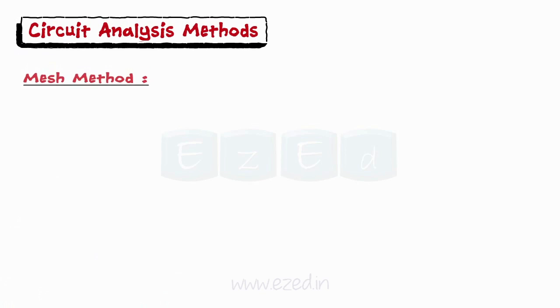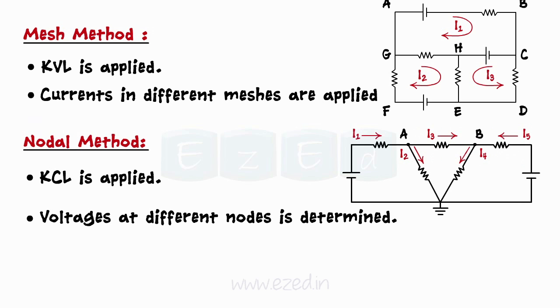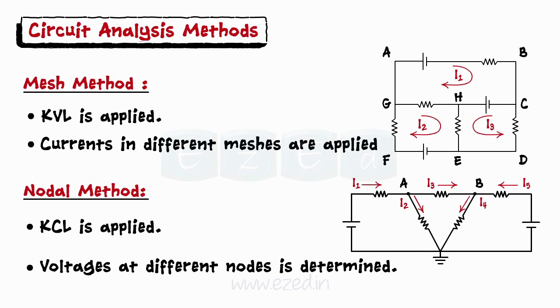In mesh method, we have applied KVL to find the branch currents. Now, we apply KCL in nodal analysis. This method is carried out to determine the voltages of different nodes with respect to reference node.